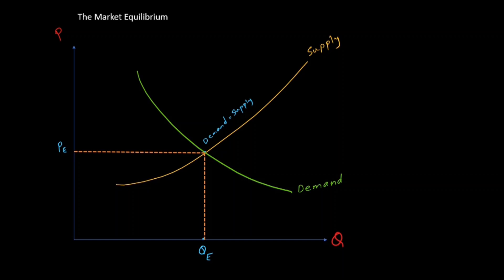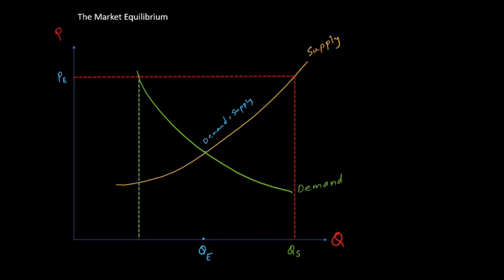Let's understand how this equilibrium is established. Suppose we consider gasoline and the seller wants to sell at a much higher price than the equilibrium price. At such a high price the seller would be extremely happy — it's a highly profitable situation and he is willing to sell a very high quantity QS. But buyers would not be willing to buy such a huge quantity at that high price. Instead, the buyer is willing to buy only QD, which is far less than QS. This difference — QS greater than QD — is called a surplus.